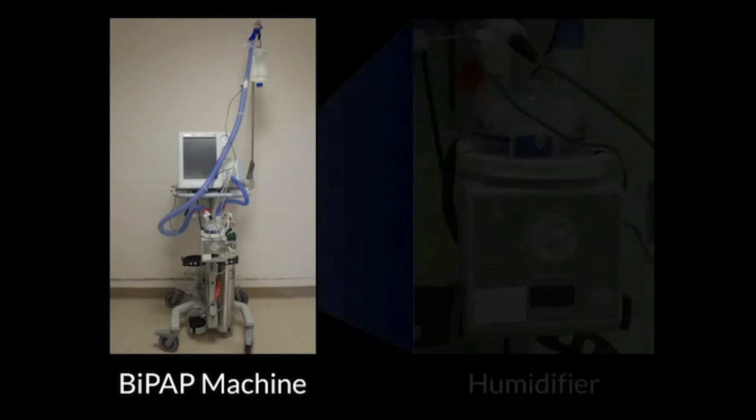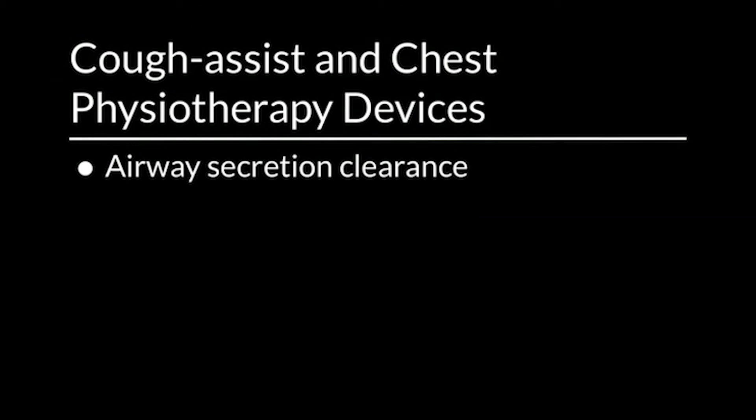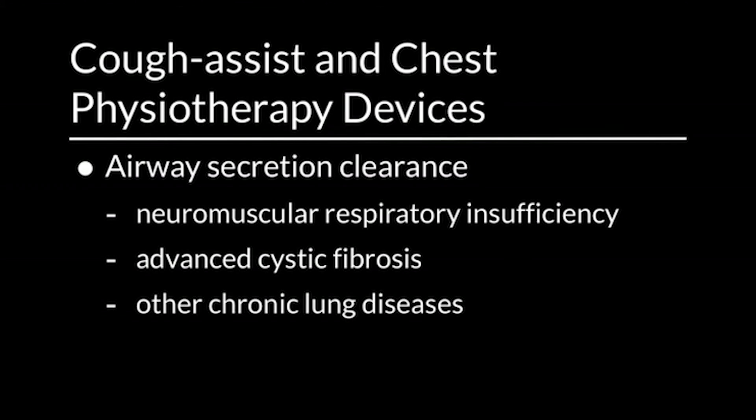Oxygen sources can be added to any of the BiPAP machines or ventilators with non-invasive modes, and humidifiers are crucial when considering technical aspects. There are also additional non-invasive adjuvants that can be helpful in respiratory failure: cough assist devices and non-invasive chest physiotherapy devices — vests that literally percuss — can be quite helpful with airway secretion clearance. These are particularly useful in patients with neuromuscular respiratory insufficiency and in those with advanced cystic fibrosis or other chronic lung disease.